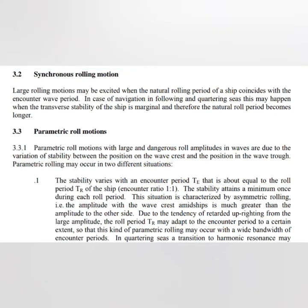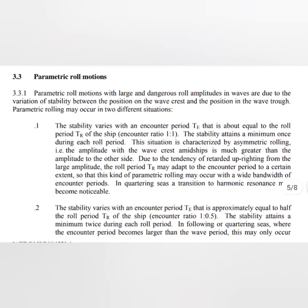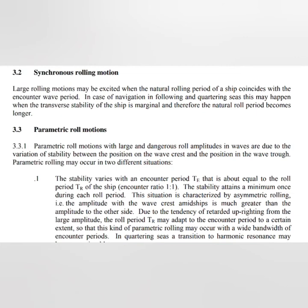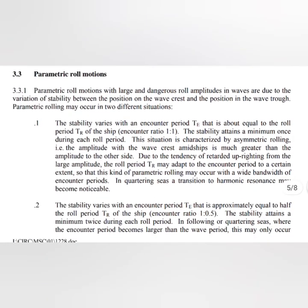Next is synchronous rolling motion. As the name suggests, there is a synchronization of the ship's natural rolling period with the encounter wave period, creating large rolling motions. This can be dangerous when the transverse stability of the ship is marginal. On similar lines there is parametric rolling, which is quite dangerous and can happen suddenly. It occurs when the encounter period equals the roll period of the ship, or when the encounter period is approximately half the roll period — meaning waves hit the ship once or twice during one complete cycle of roll — thus instantly increasing the angle of heel, which is dangerous if transverse stability is marginal.